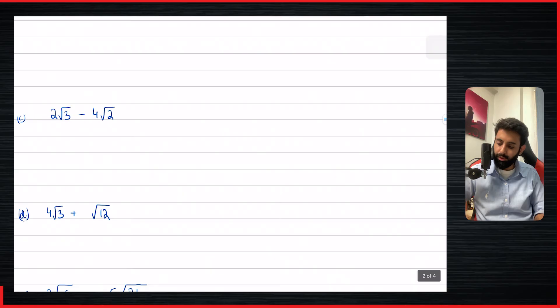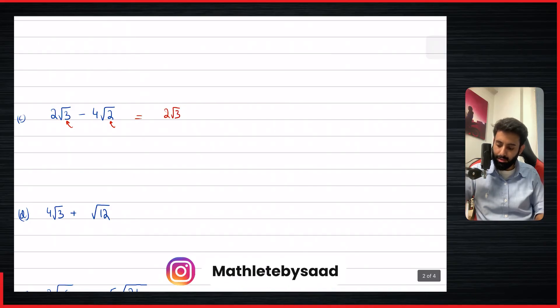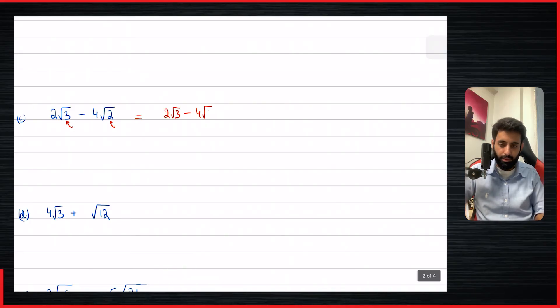Two under root three minus four under root two — this cannot be further simplified because you have under root three here and under root two there. So this will just remain as it is: two under root three minus four under root two.